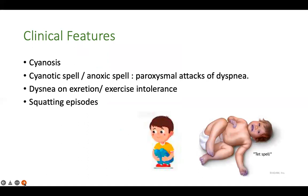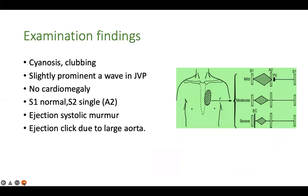The clinical features are cyanosis. Patients often present with cyanotic spells or anoxic spells — paroxysmal attacks of dyspnea with increased cyanosis. Older children complain of dyspnea on exertion or exercise intolerance, and after playing or running the child would squat. Squatting episodes are common in older children, whereas small babies present with cyanotic spells. On clinical examination there will be cyanosis and clubbing, and the precordium is usually normal.